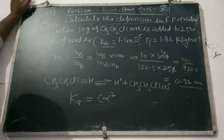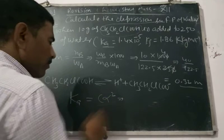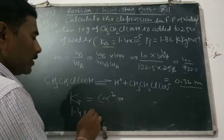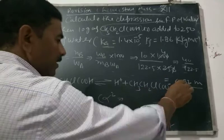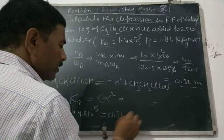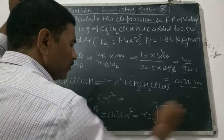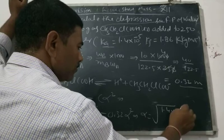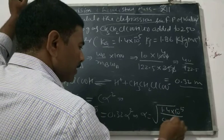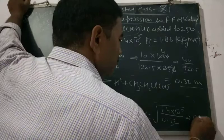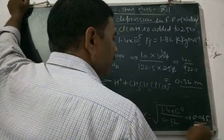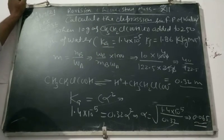Ka = C·α² for weak acid. यहाँ पर value put करेंगे: 1.4 × 10⁻⁵ = 0.32 × α². Then α = √(1.4 × 10⁻⁵ / 0.32). इसको solve करने पर α की value मिल जाएगा 0.065 near about. Alpha यानी degree of dissociation है।